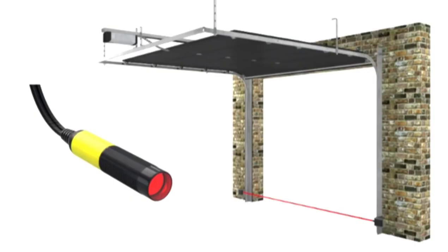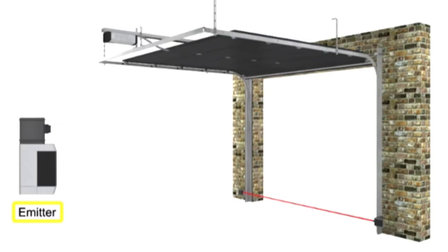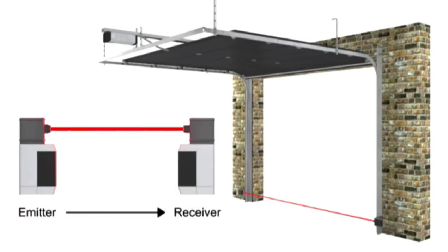Photoelectric sensors have the greatest detection range from 1 mm to 25 meters or more. They operate by the use of an emitter which transmits a beam of light to the receiver. When the light is normally being received, it is known as a dark-operated mode. When the absence of light is required, it is known as light-operated mode.